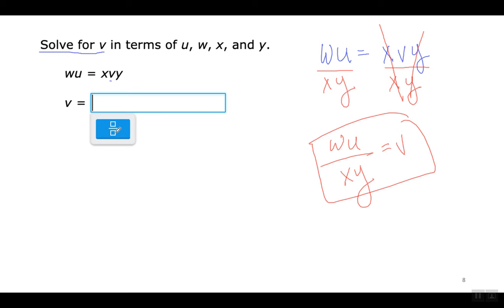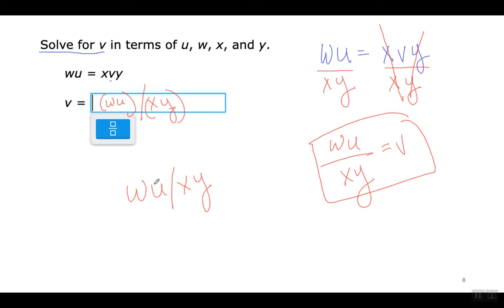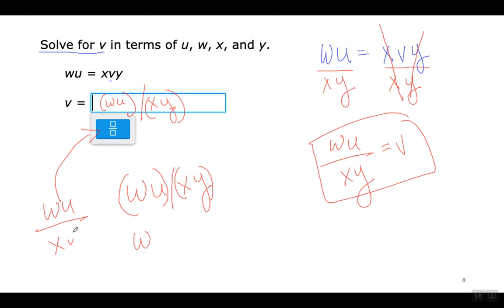You can write the answer using the fraction button — put WU on top and XY on the bottom. Or you can write it in parentheses form. You have to put the parentheses though, because without them it could be interpreted ambiguously as W times U divided by X times Y. With parentheses it's clear you mean the product WU all divided by the product XY.